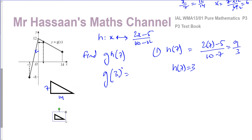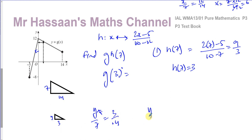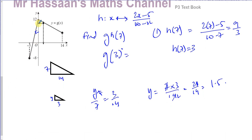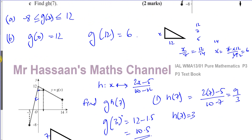Setting up the similarity ratio: y/7 = 3/14, so y = 7 × 3/14 = 21/14 = 1.5. The y-value is then 12 - 1.5 = 10.5. Therefore g(3) = 10.5, and g(h(7)) = 10.5.